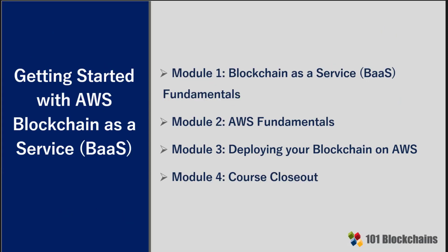The course is broken down into four specific modules. Module one will talk about blockchain as a service fundamentals. Module two will cover AWS fundamentals — we'll need to know some key areas in AWS to be able to deploy a blockchain, including security groups, EC2, CloudFormation, and other services critical to the success of deploying a blockchain.